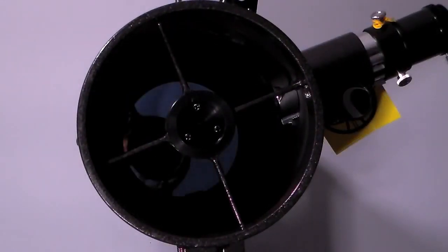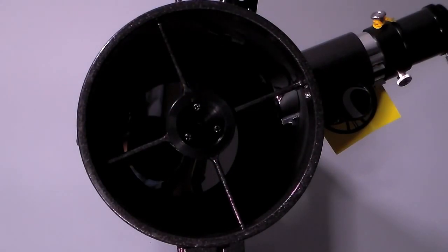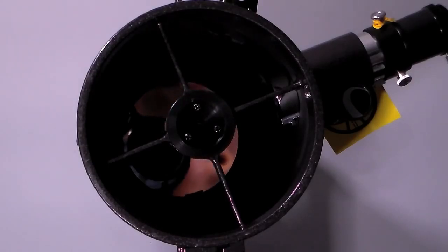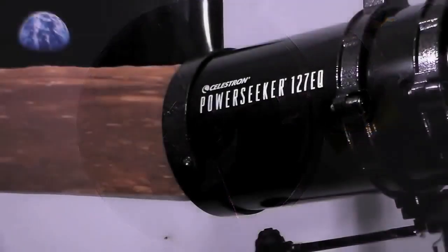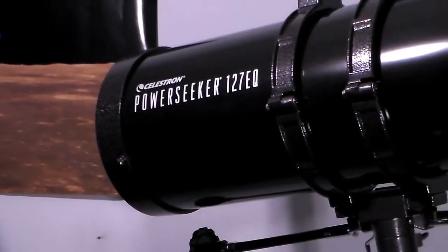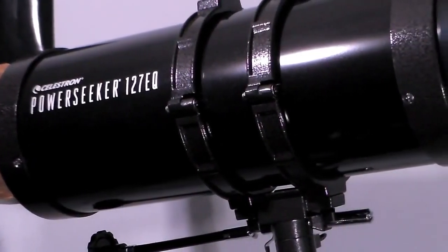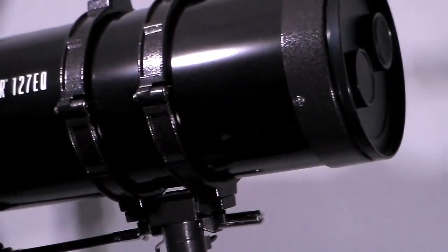It has an aperture of 127 millimeters or 5 inches and a focal length of 1000 millimeters or 39 inches. This telescope can also be considered as a Schmidt-Cassegrain catadioptric telescope. This type of telescope combines a Cassegrain reflector's optical path with a Schmidt corrector plate to make a compact astronomical instrument that uses a simple spherical surface.